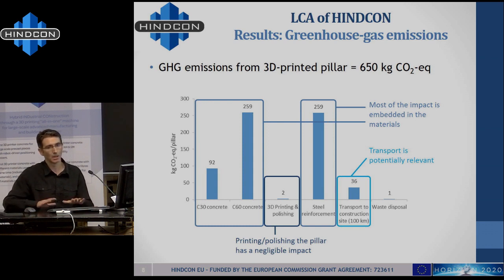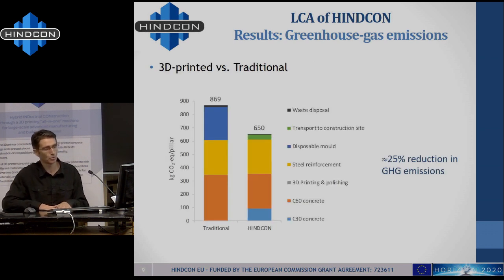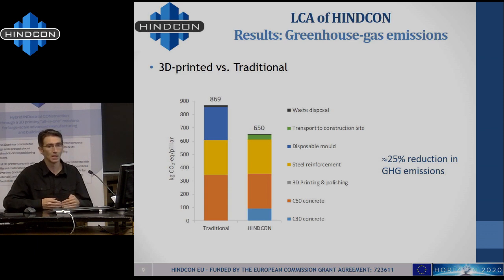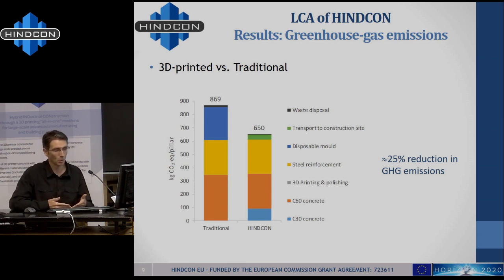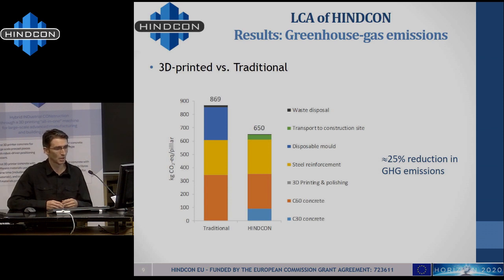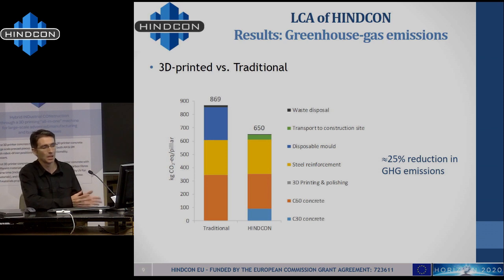When we compare the two approaches — 3D printing versus the traditional approach — you can see that the Hincone pillar produces 650 kilograms of CO2, while the traditional approach with a disposable mould would be a little more. In both cases we have more or less the same impact from the production of concrete and reinforcing steel, but we have more impact in the traditional approach due to the production of the mould, versus the 3D printing scenario where most of the impact is related to transport. Because printing itself does not add much environmental impact, for this particular case study we are saving between 20 to 25% of greenhouse gases.